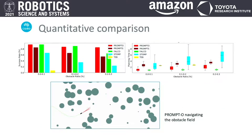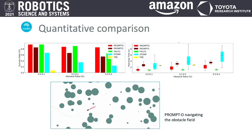We perform a large set of quantitative tests on a randomized obstacle field with varying obstacle sizes. The results show that PROMPT-O outperforms PROMPT-S consistently due to its better sampling strategy. Both of them outperform state-of-the-art trajectory optimization planners like STOMP and TEM. PROMPT-O matches the performance of state-of-the-art lattice planners like FALCO, both in terms of success rates as well as computational time for lower obstacle densities.